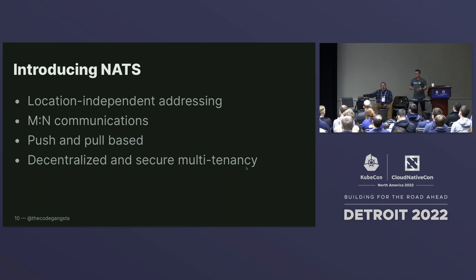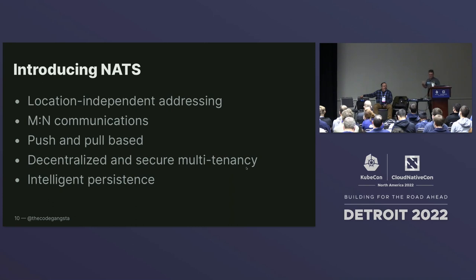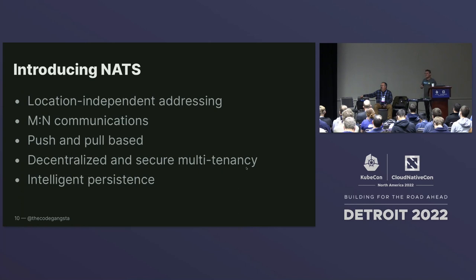We are also push and pull-based, so somebody can go request data — ask a question and get an answer back — or they can have something pushed to them if they're interested in a particular topic. We also have this idea of decentralized and secure multi-tenancy. We really wanted to design NATS to be truly multi-tenant, meaning completely different organizations can coexist on a single NATS system and still have their security requirements met. And lastly, intelligent persistence — if we store our messages in a globally ordered set, we can do very interesting things around how we replicate those across the globe and express different data structures like key-value stores and object stores.